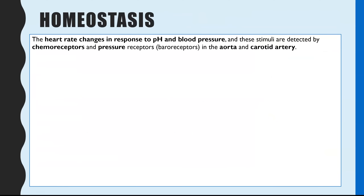We'll look at how this links to homeostasis. The two key examples are how the heart responds to changes in pH of the blood and blood pressure — these are the stimuli which trigger whether the impulse goes down the parasympathetic or sympathetic nervous system. Changes in pH are detected by chemoreceptors; changes in pressure by baroreceptors. Both are found in the walls of the aorta and the carotid artery.